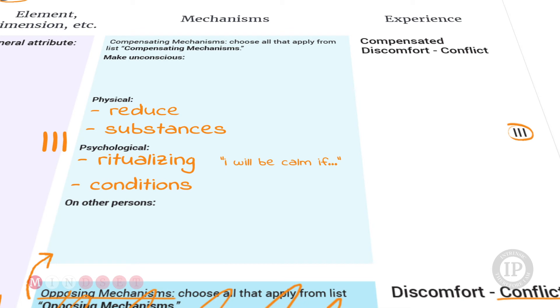Or projecting the whole lack of calm or serenity, like anxiety on other people or displacing it. Using displacing to make other people nervous. Or rationalizing by saying, I cannot be calm because they do this to me, I can't because of them or the world.